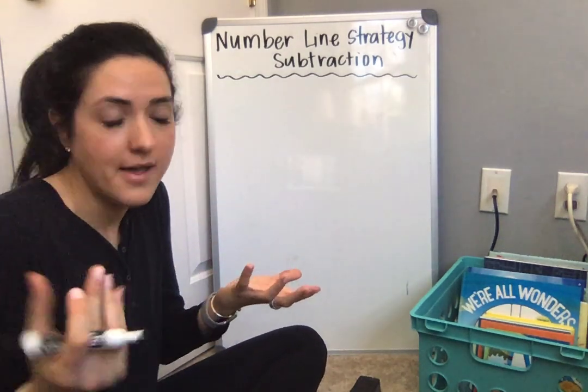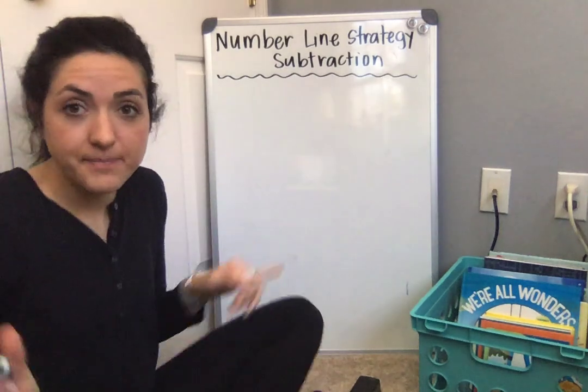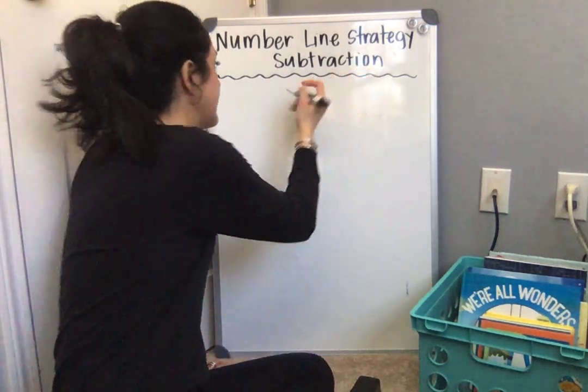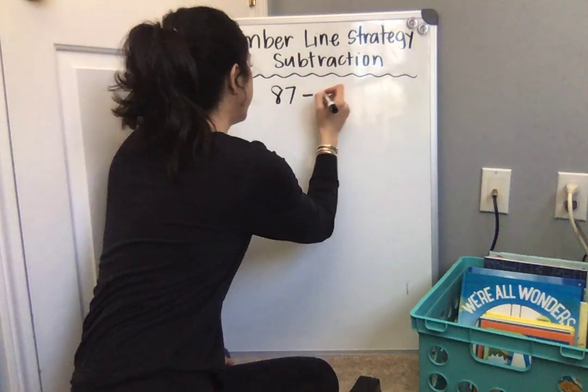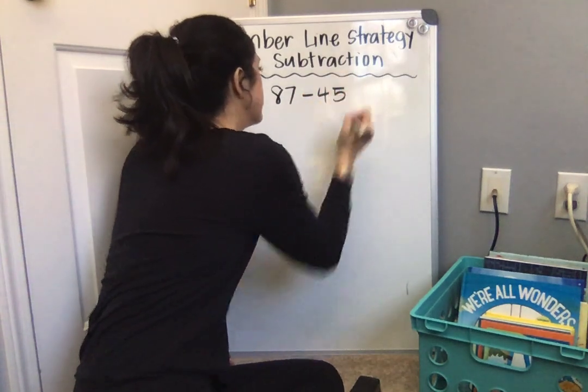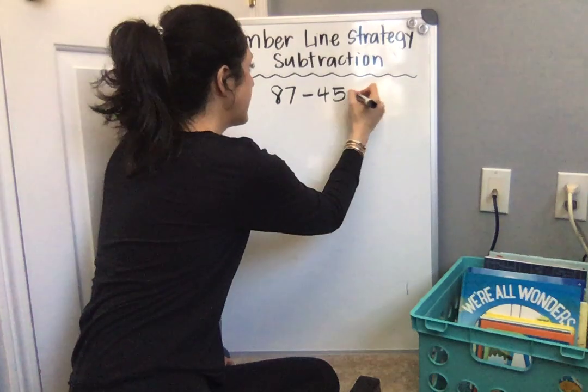So I can pick any two-digit numbers when I'm reviewing for subtraction. My first number that I'm going to pick is 87, and then my second number is 45. So 87 minus 45 equals something.